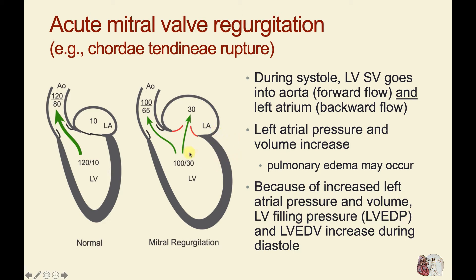With acute mitral valve regurgitation and this acute increase in left ventricular volume, the left ventricle will be enlarged, but this is just passive distension. The left atrium will also be enlarged due to passive distension. This is not a remodeling effect because this is acute regurgitation.